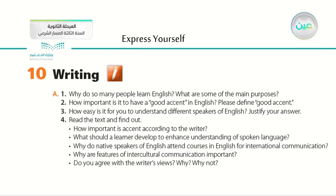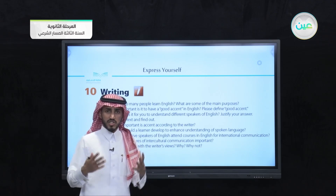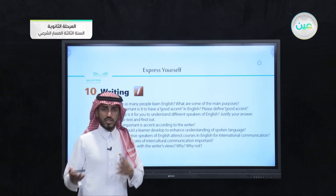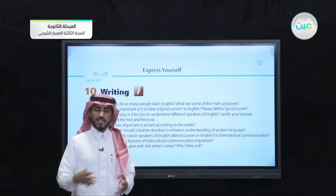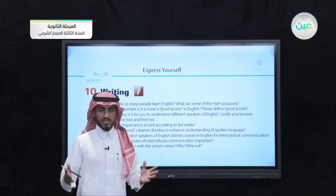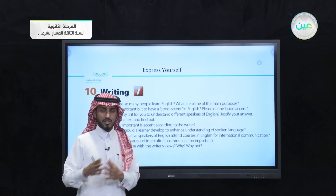Question one: Why do so many people learn English? What are some of the main purposes? Number two: How important is it to have a good accent in English? Please define 'good accent.' Number three: How easy is it for you to understand different speakers of English? Justify your answer. Number four is a step we will go through after reading the text together. These first three questions are about your opinion — the answers are not going to be true or false, because we are asking about opinions. There are no right and wrong opinions.